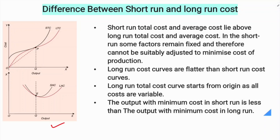The first point is: short-run total cost and average cost lie above long-run total cost and average cost. In the short-run, some factors remain fixed and therefore cannot be suitably adjusted to minimize the cost of production.